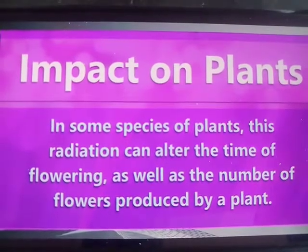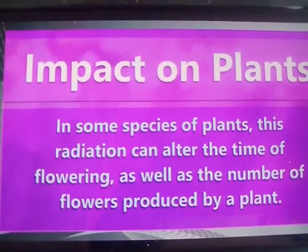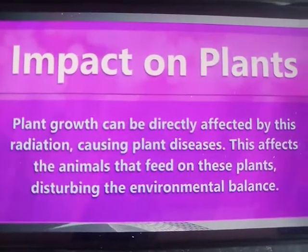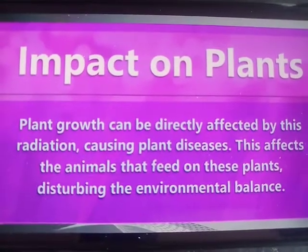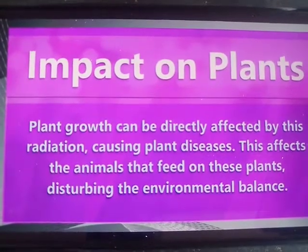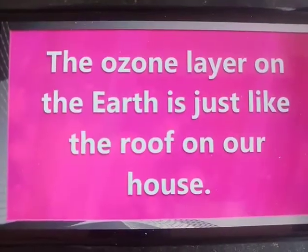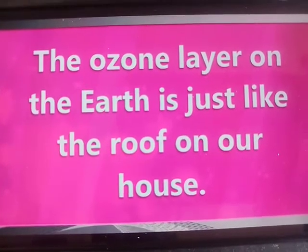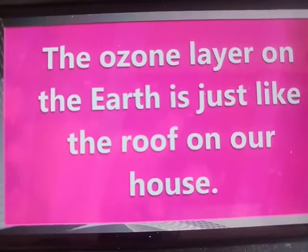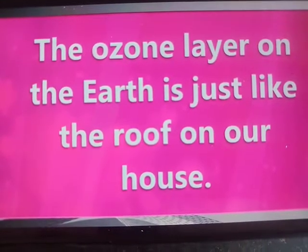Impact on plants: In some species of plants, this radiation can alter the time of flowering as well as the number of flowers produced. Plant growth can be directly affected, causing plant diseases. This affects the animals that feed on these plants, disturbing the environmental balance. The ozone layer is very important because it forms a layer over the earth — just like the roof on our house — which protects us from every harmful substance.